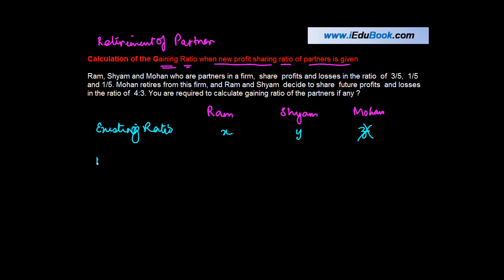You are told that the new ratio of the partners is A is to B. This is something like, you already had 50 rupees, someone came and gave you some money, and now you have 70 rupees.